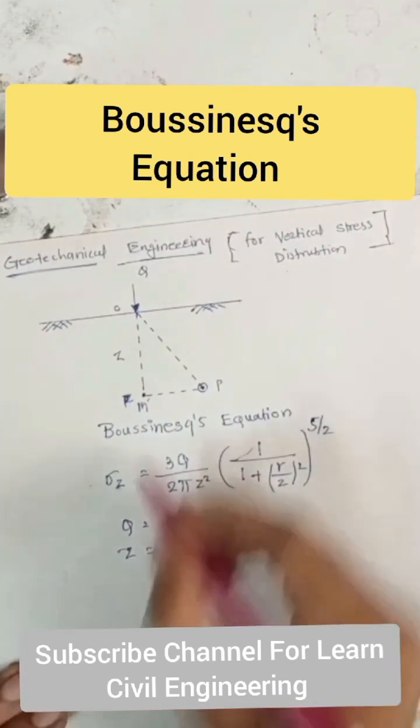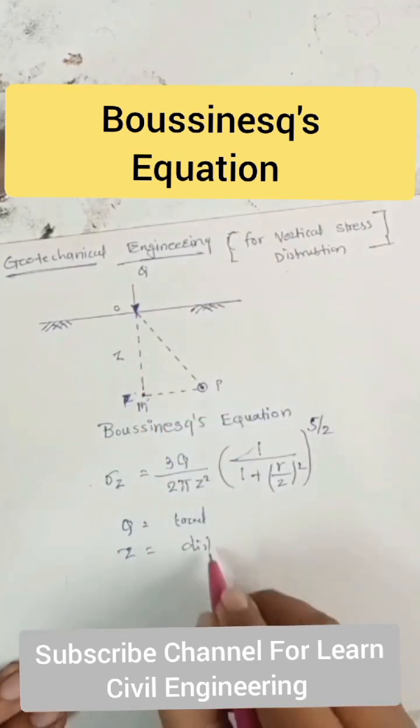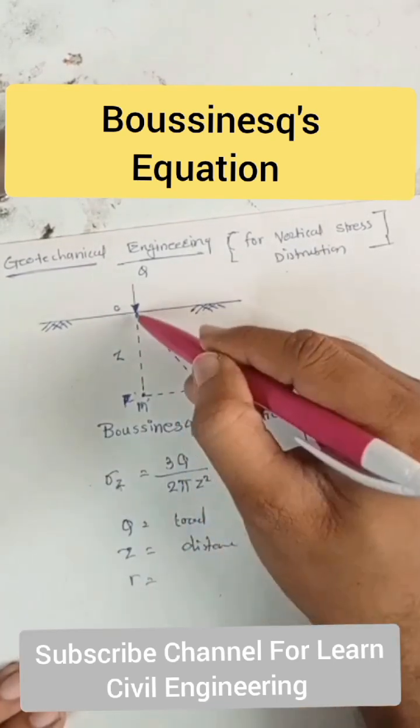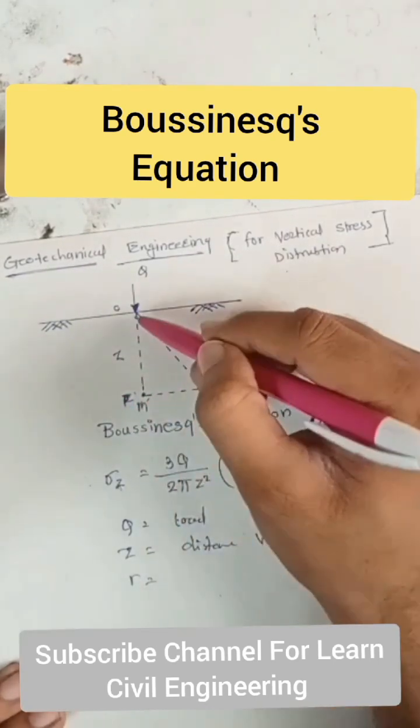z is the distance, the vertical distance from O to M. And what is r? r is the radius. So here, if this point is directly below the point load...